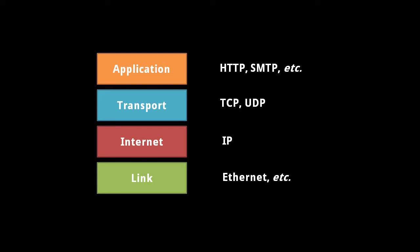Now, let's get into the nuts and bolts of the internet protocol and its associated protocols. The way these pieces all work together is often described in this four-layer model. At the bottom is the so-called link layer, which refers to the workings of each individual network. Ethernet, for example, is a very commonly used standard at the link layer.